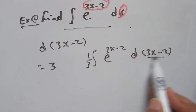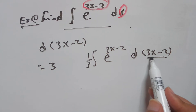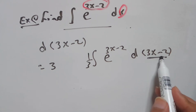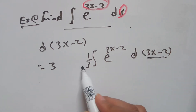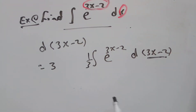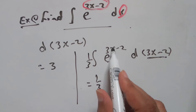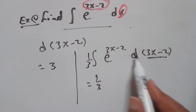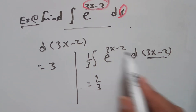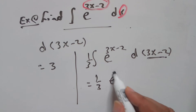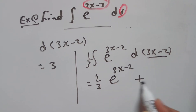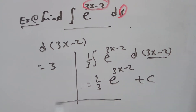The derivative of 3x minus 2 is 3, divided by 3 equals 1. Applying the rule, this is e to the power u du — the same form as e to the power x dx — then the result is the same function: one-third e to the power 3x minus 2 plus c. The same answer.